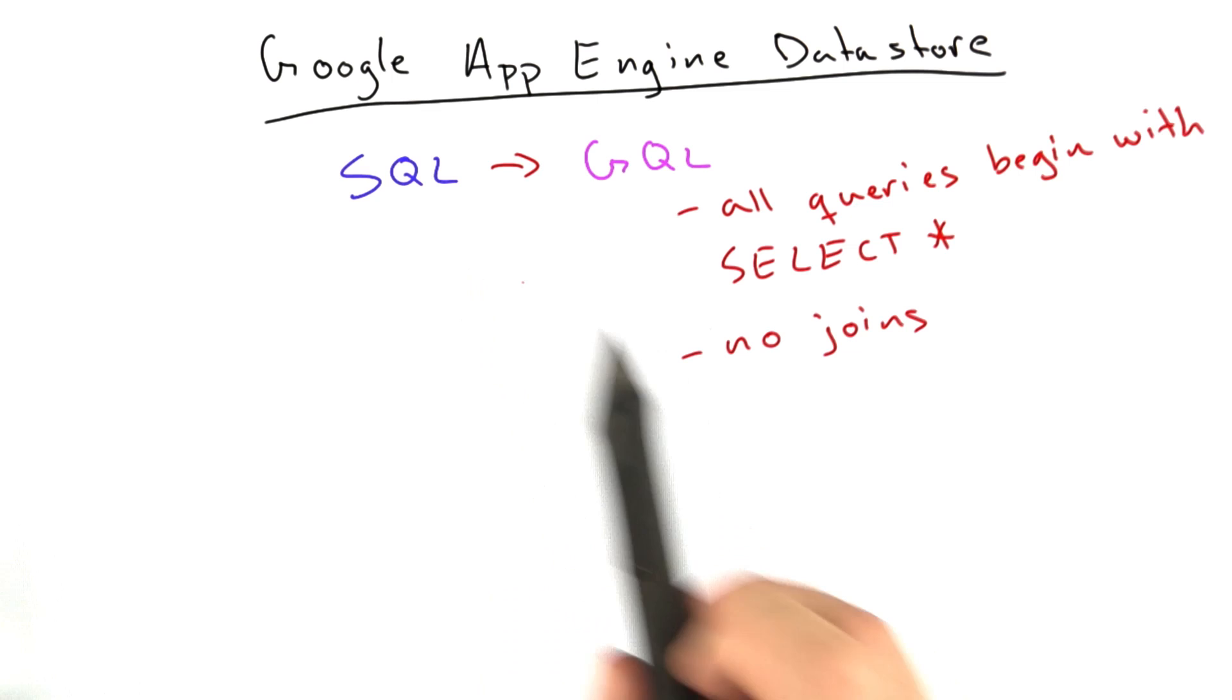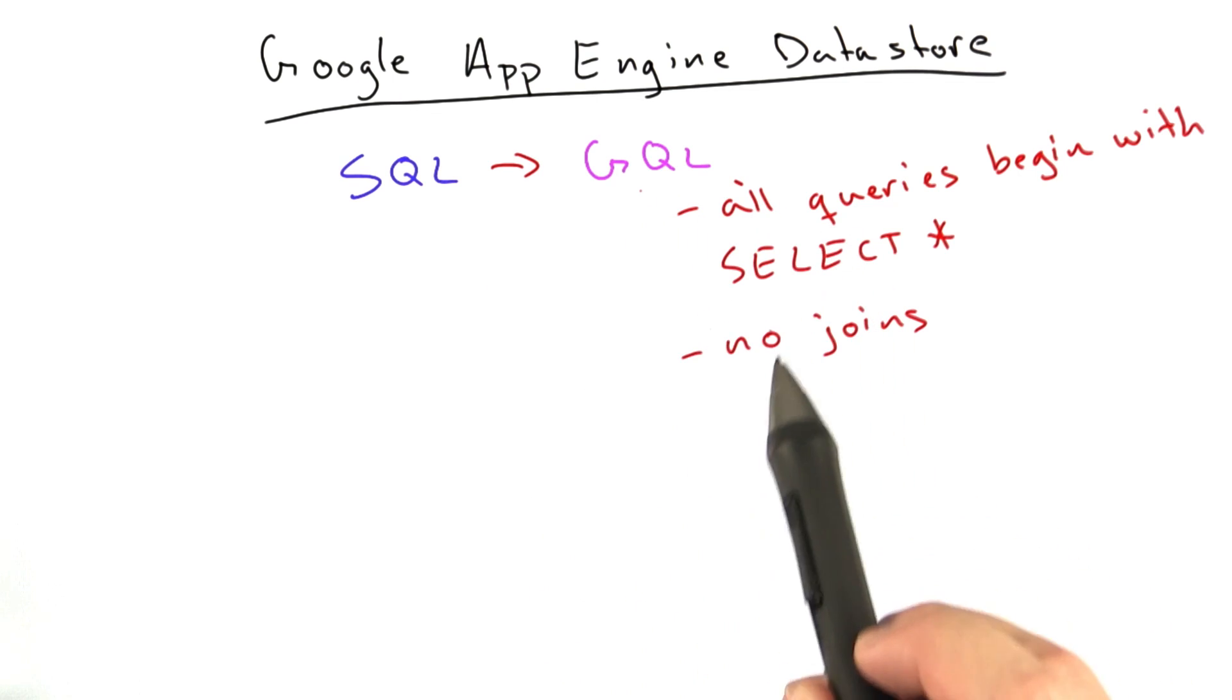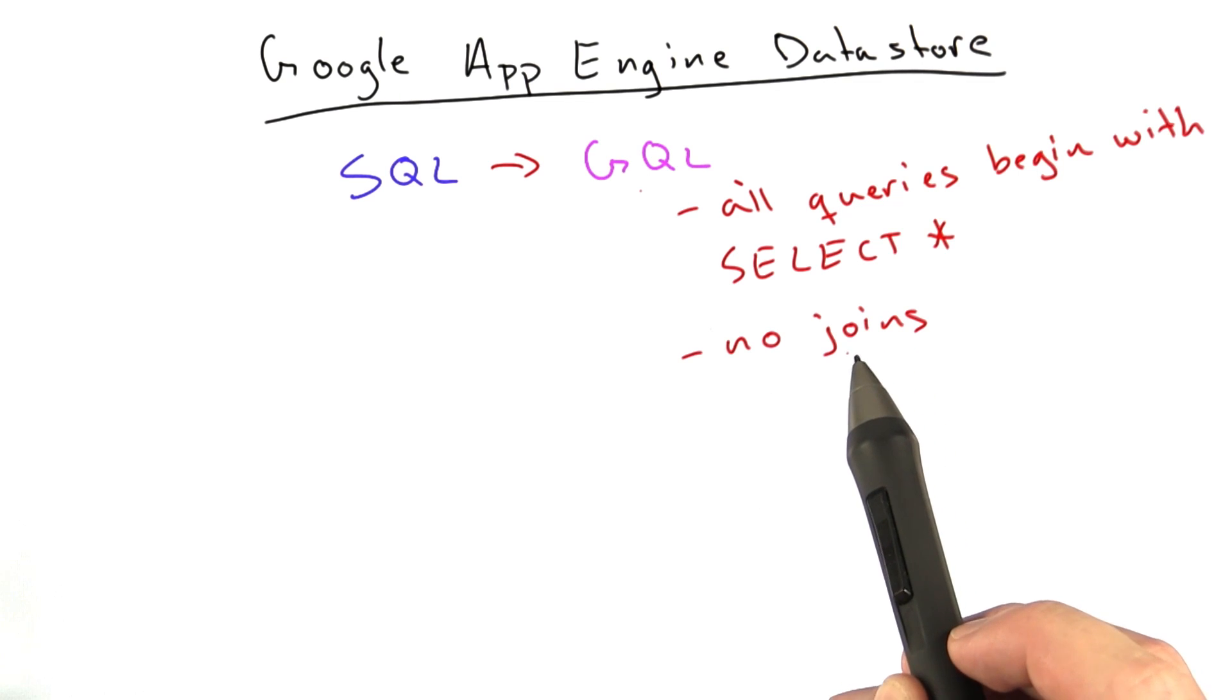Even if I were working in a SQL database, I probably wouldn't be doing a whole lot of joins. And in the App Engine data store, we won't be doing any joins whatsoever because it's not possible.